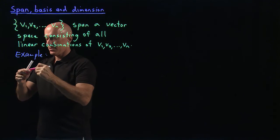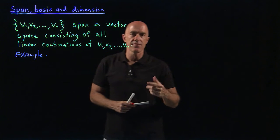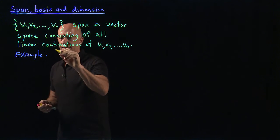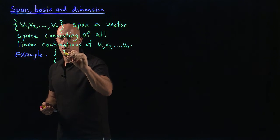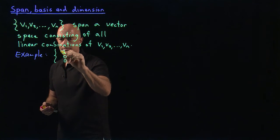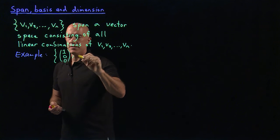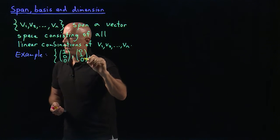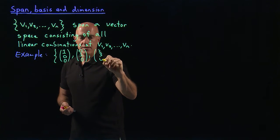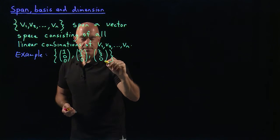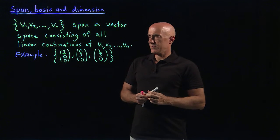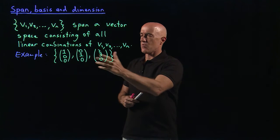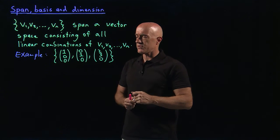I can give you an example by giving you a set of vectors. Let's look at this set of vectors we considered in the last video. We have the set of vectors given by (1, 0, 0), (0, 1, 0), and (2, 3, 0). So these are 3 vectors — they're 3 by 1 column matrices.